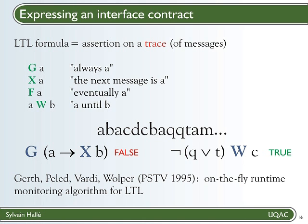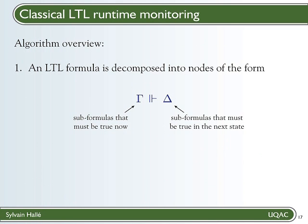What's interesting about LTL is that, one, it allows us to express constraints on sequences of symbols — sequences of messages in our case — and two, there exists an algorithm that can monitor an LTL formula on the fly on any trace of messages. The trick is to decompose the original formula into nodes in a tree, and each node is in the form of two sides. On the left-hand side you have LTL formulas that must be true now, and on the right-hand side the LTL formulas that must be true in the next state or the next message.